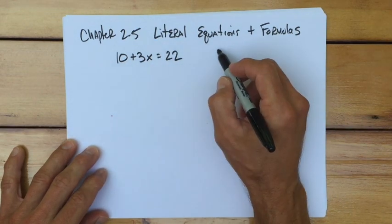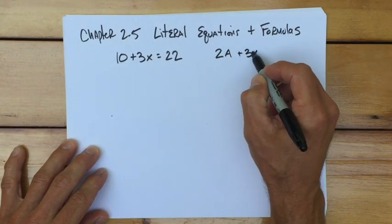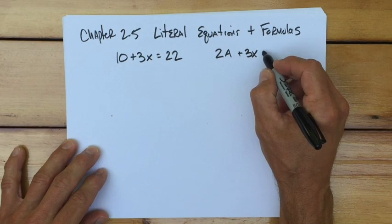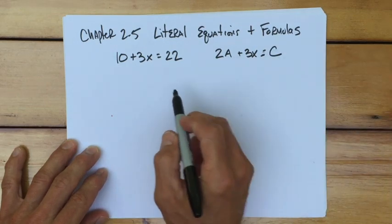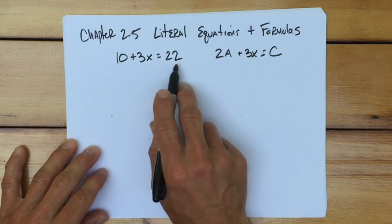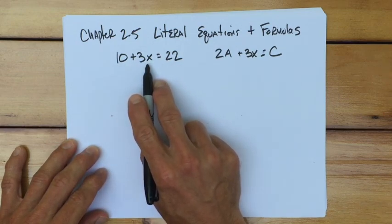Let's imagine that instead of the 10, we put 2a, and we'll keep the 3x, and instead of the 22, let's make it a c. Now, if there's only one variable in an equation, the variable that's there is the one we solve for. So this is kind of straightforward.